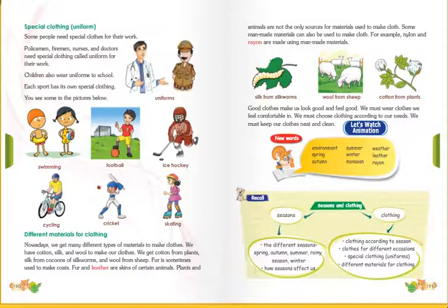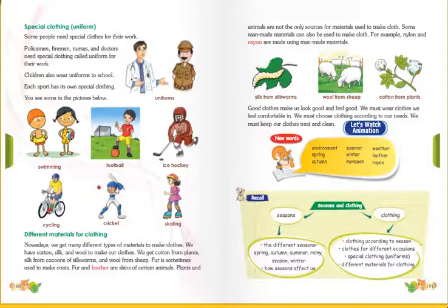We get cotton from plants. Silk is from cocoons or silkworms. Wool is from sheep. Fur is sometimes used to make coats. Fur and leather are the skins of certain animals.